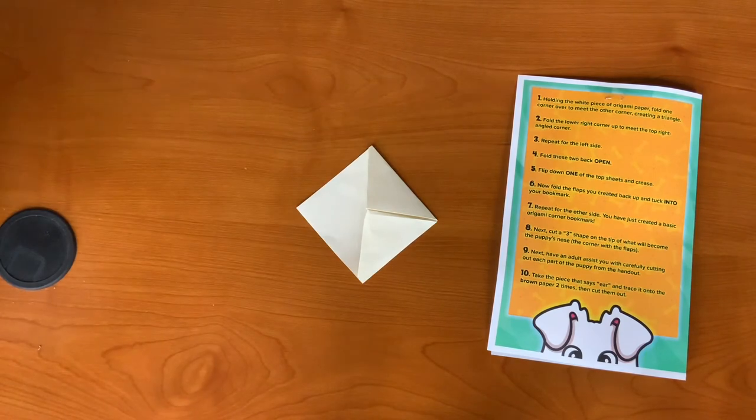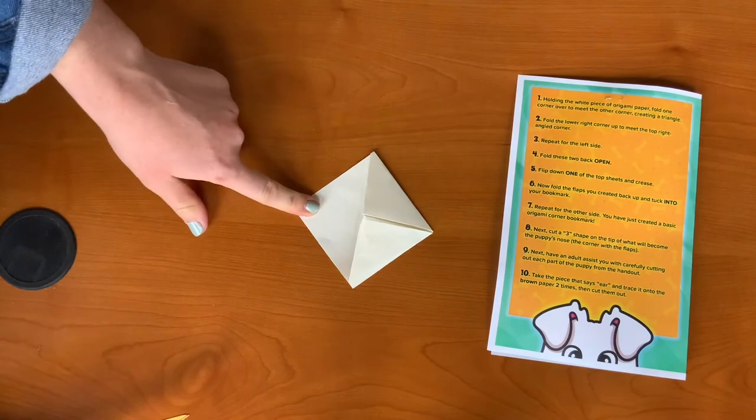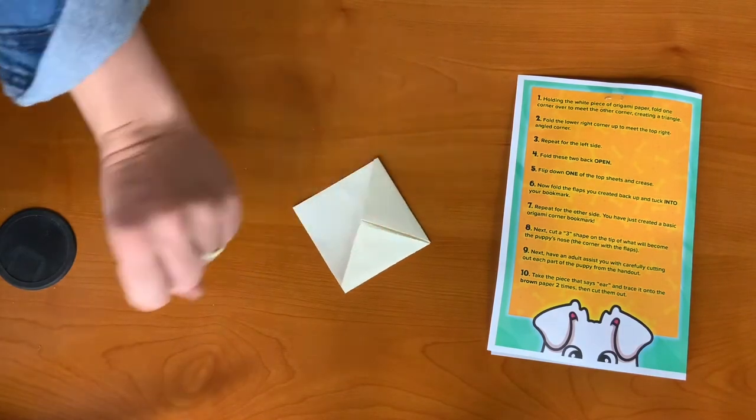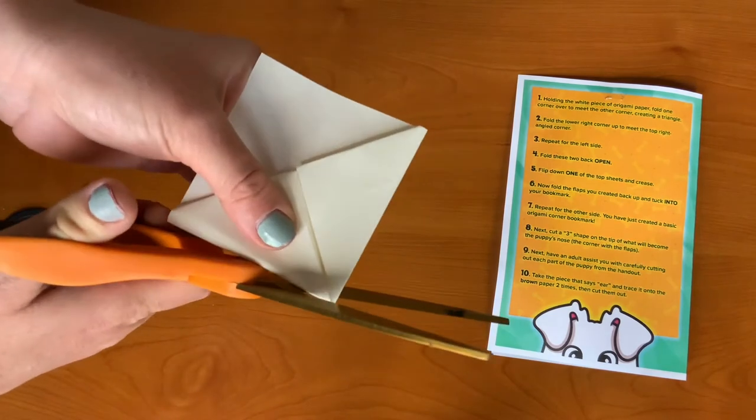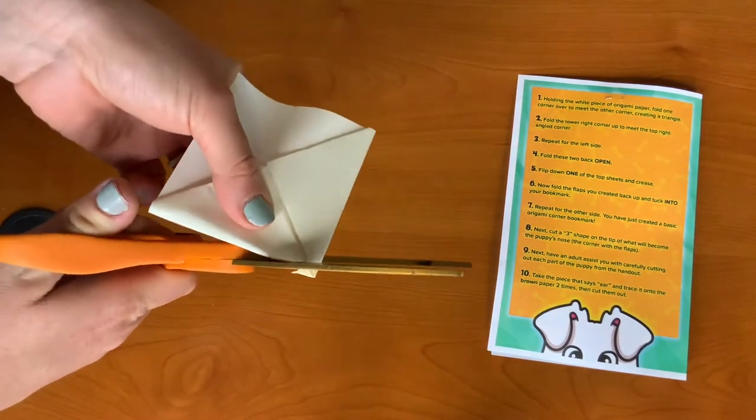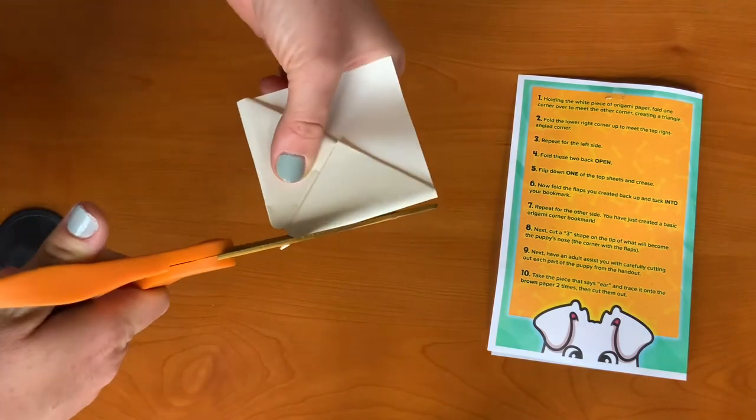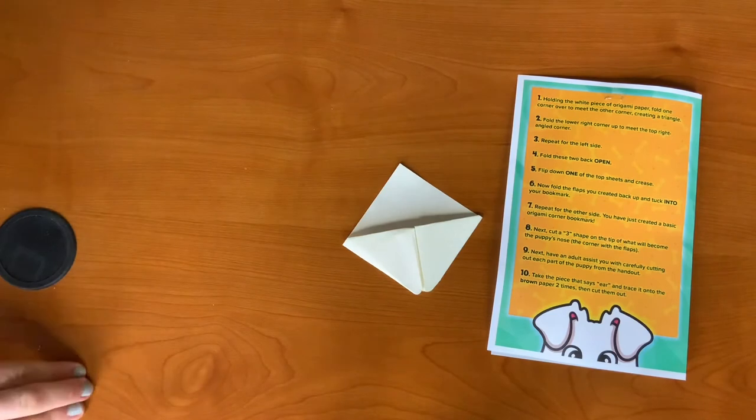Step eight, next, cut a V shape on the tip of what will become the puppy's nose. So this is going to be the corner that has the flaps. I'm just going to cut a V and put a rounded edge to look like the puppy's nose.